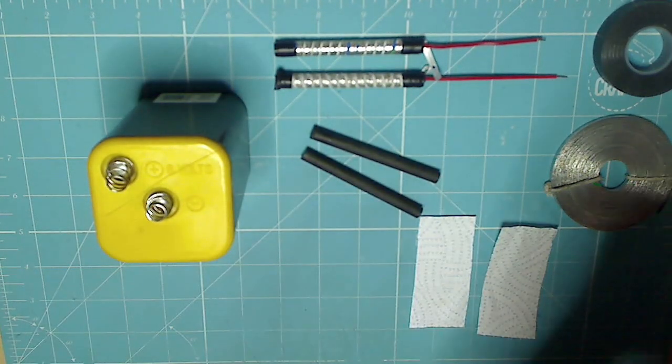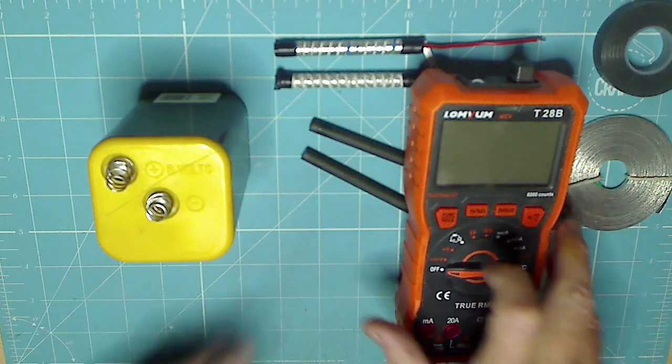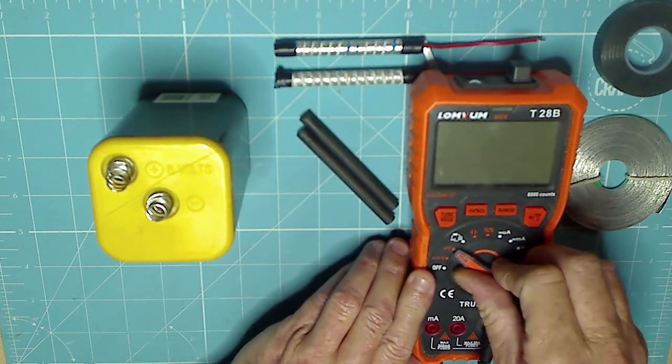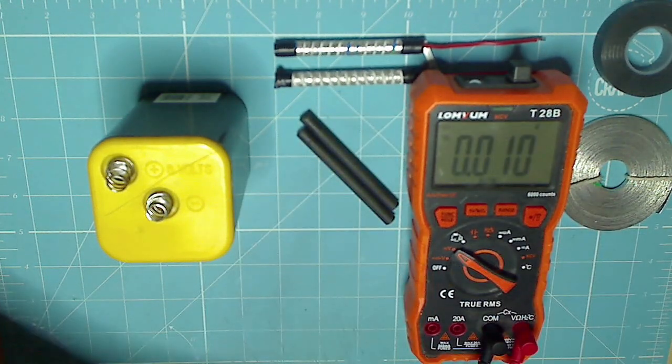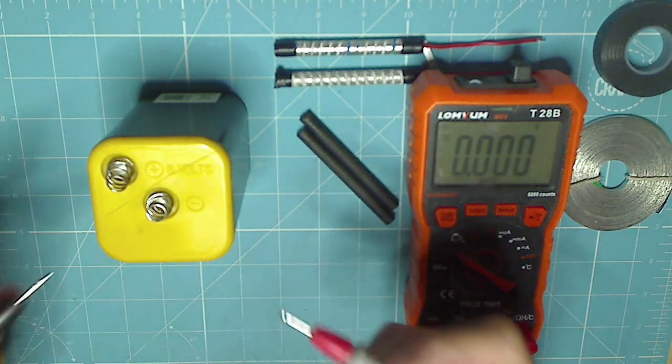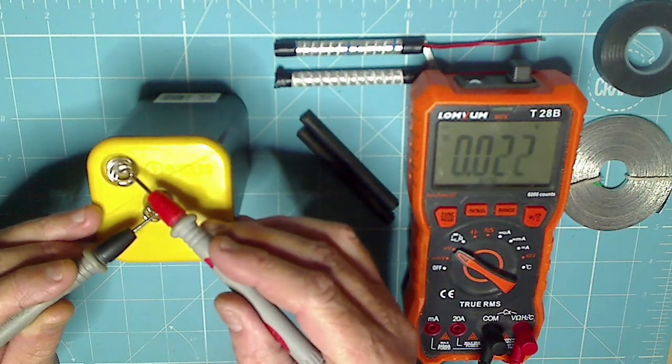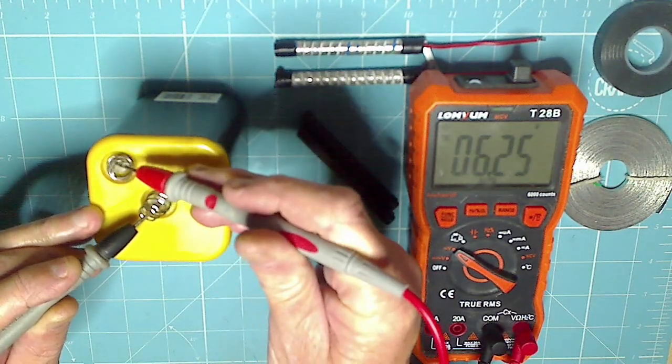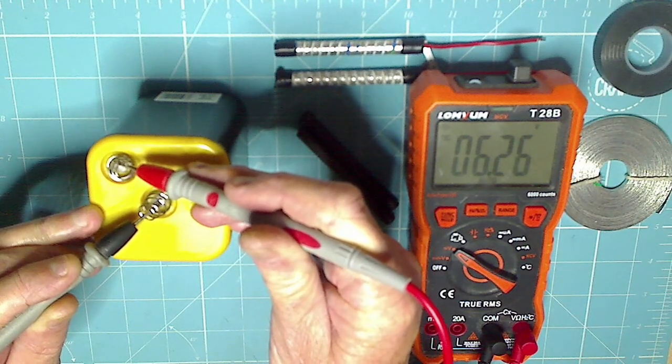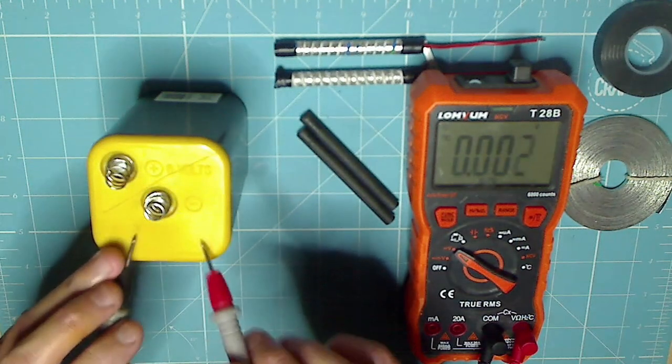I can show you that. There's my multimeter. Switch it on and there we go. 6.26 volts. So this battery is still good.